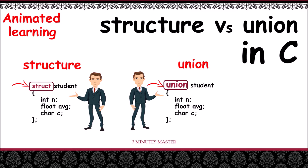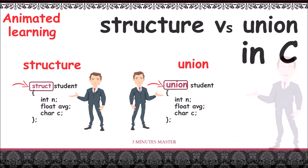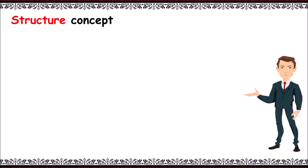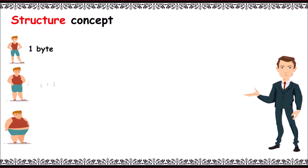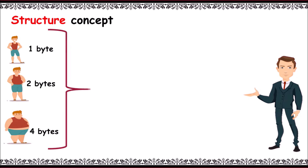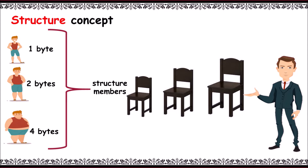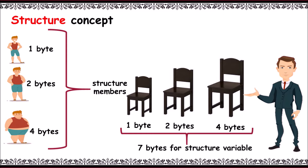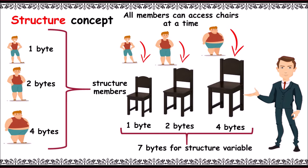Hello guys, welcome to 3MM. Let's learn the difference between structure and union in C. The structure concept: consider three members of size 1, 2, and 4 bytes — assume them as structure members. When we create a structure variable, memory is allocated for all the members. Consider three chairs for three members with sizes 1, 2, and 4 bytes — altogether 7 bytes for the structure variable. In a structure, all members can access their chairs at a time.